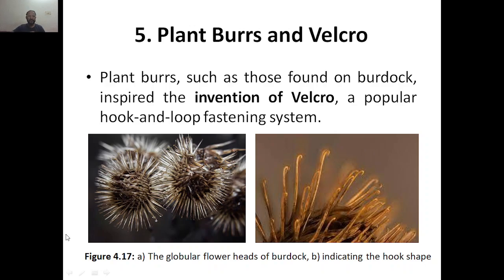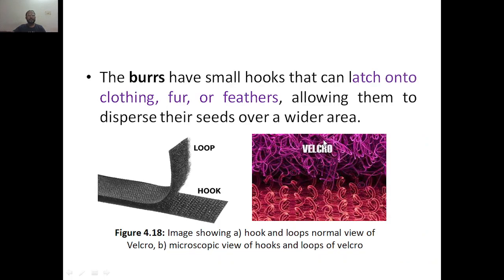Here are some of the structures you can see. This is the globular flower head of the burdock, and the second image indicates the hook shape of it — like this hook shape. The burrs have small hooks that can latch on to clothing.